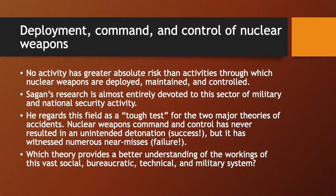Safety within command and control of nuclear weapons is crucially important. Sagan gives detailed case study attention to several important nuclear and international crises, including especially the Cuban Missile Crisis of 1962, as well as a couple of other near misses and major accidents in the U.S. command and control system. He regards this area as a tough test for the two major theories of accidents: normal accident theory and high-reliability organization theory.